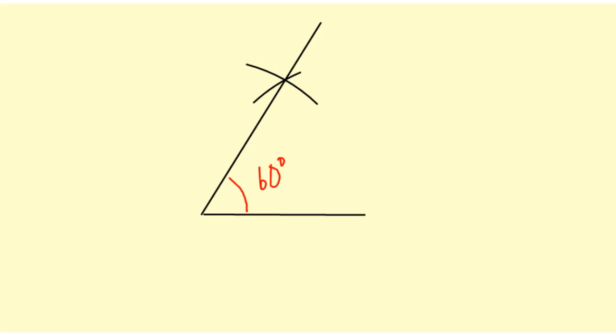Because if I had drawn a triangle, it would have been equilateral and all three angles would be 60 degrees. But since I'm only interested in one 60 degree angle, I can erase what I have in blue there. And there's my 60 degree angle.